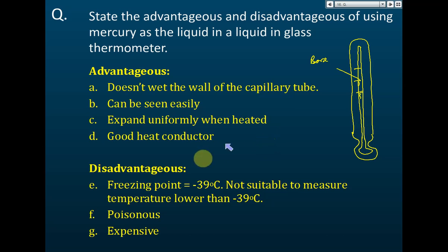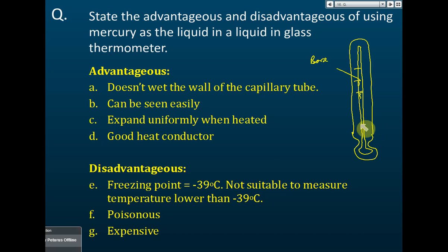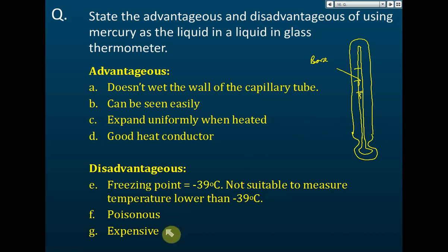The disadvantages of mercury: its freezing point is -39°C, so it cannot measure temperatures lower than that — for example in the Arctic or Antarctic where temperatures may reach -50 or -80°C, mercury would already be frozen. It is also poisonous — if the thermometer breaks and mercury contacts a wound, it can poison the body. Additionally, mercury is more expensive compared to alcohol.